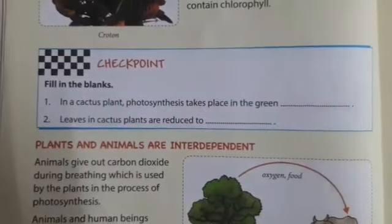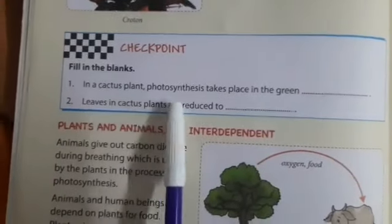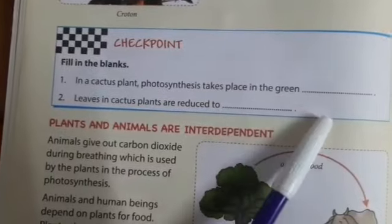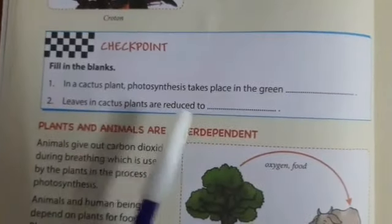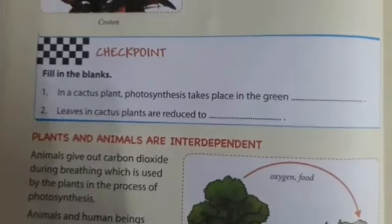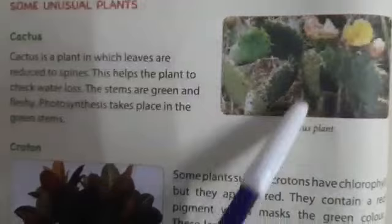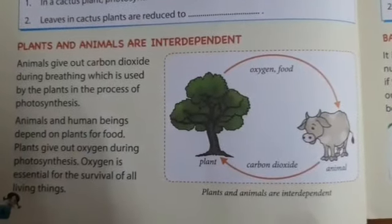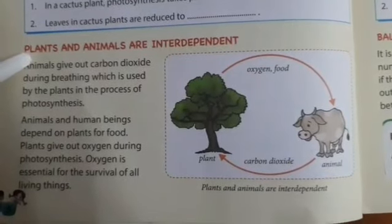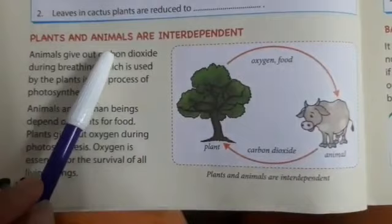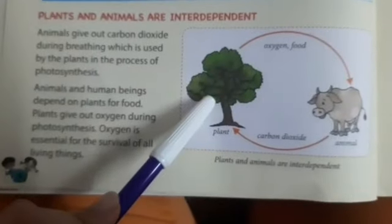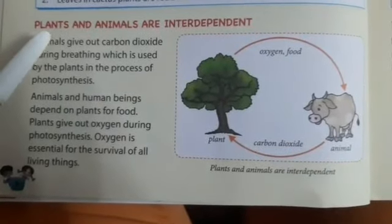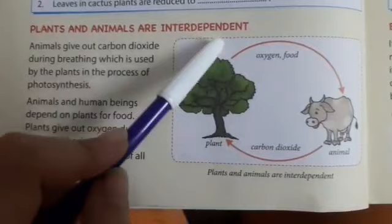Now we have some questions for you. In a cactus plant, photosynthesis takes place in the green stem. Second, leaves in a cactus plant are reduced to spines — aapne image mein dekha tha na? These plants contain spines, so their leaves are reduced to spines. In the starting of the chapter, we all read that plants are living things and they make their own food. Animals and human beings are also living things, but they cannot make their own food. That is why they are dependent on plants directly or indirectly. So our next topic is plants and animals are interdependent.